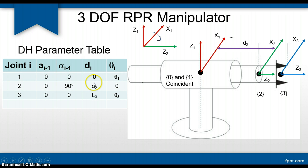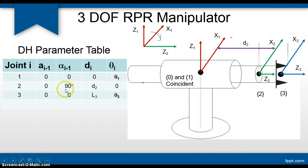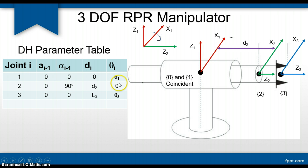Now let us look at the DH parameter table. The base frame 0 and joint 1 are coincident, so we have link length 0, link twist 0, joint offset 0, and θ1. At joint number 2, since Z1 and Z2 are intersecting, link length will be 0. Alpha will be +90 degrees, as we assigned X1 using the right-hand rule. D2 indicates the sliding of the horizontal arm, and since it is a sliding joint, θ will be 0.